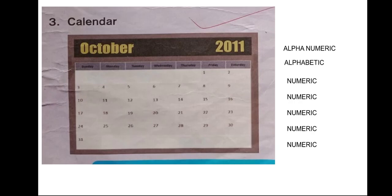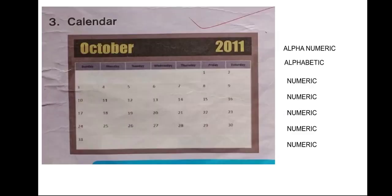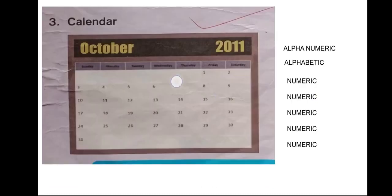Third example: 'October 2011' has both alphabet and number — write alphanumeric. Days like Sunday, Monday, Tuesday are all alphabets — write alphabetic. Numbers like 1, 2, 3 are all numeric — write numeric. This is how you check and write accordingly.